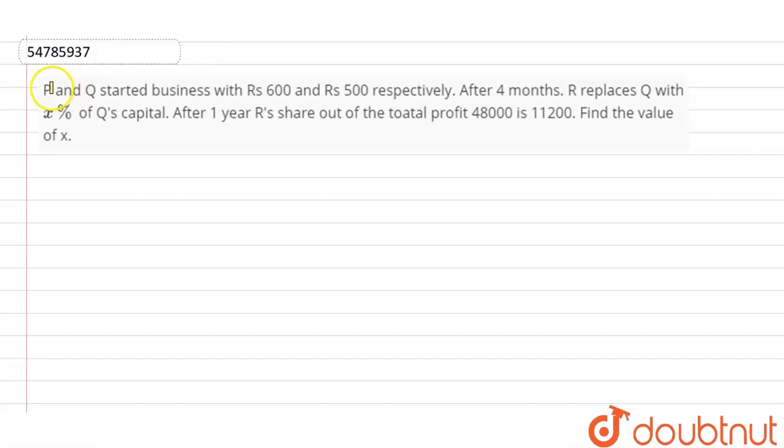Hello guys, the question is: P and Q started business with 600 and 500 rupees respectively. After 4 months, R replaces Q with X percent of Q's capital. After 1 year, R's share out of total profit 48,000 is 11,200. You have to find the value of X.